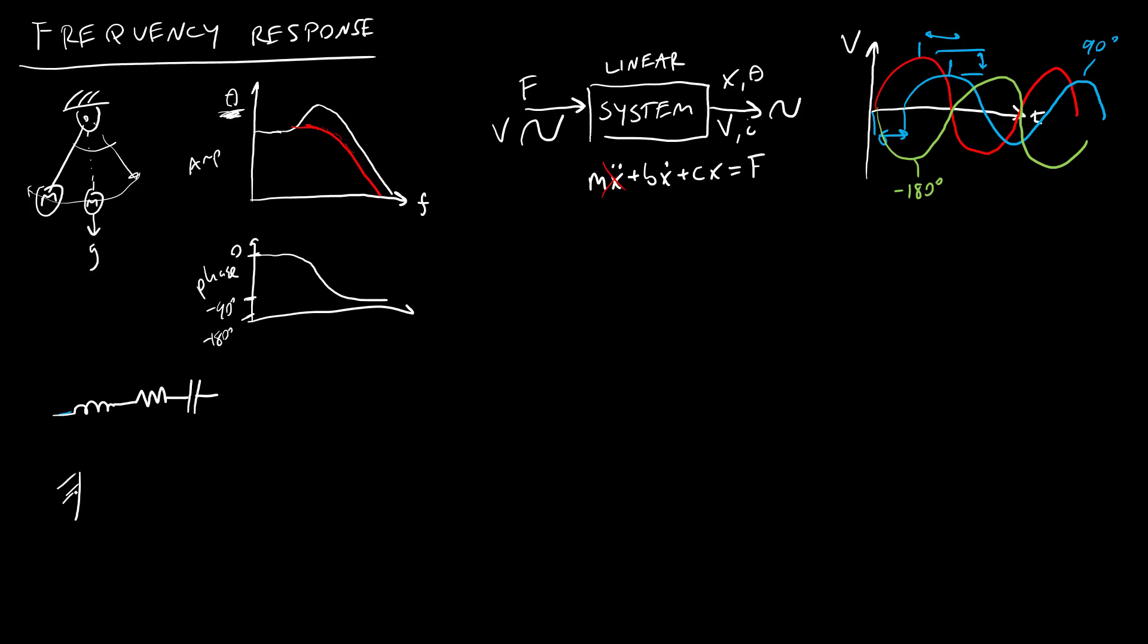In the classic system dynamics example, it's the spring mass damper. Don't get your springs mixed up with your resistors. Depending on the domain, it's a different thing represented by the same symbol.